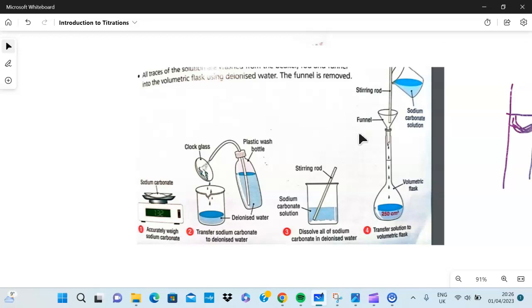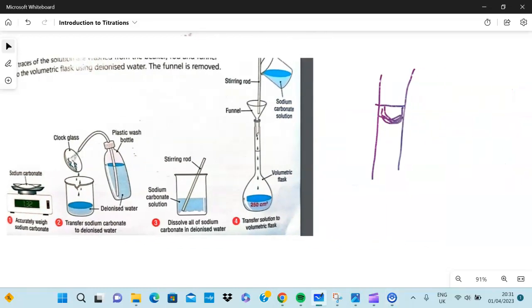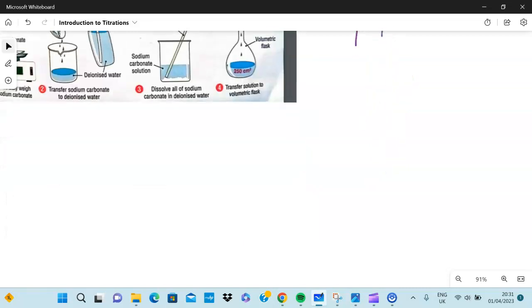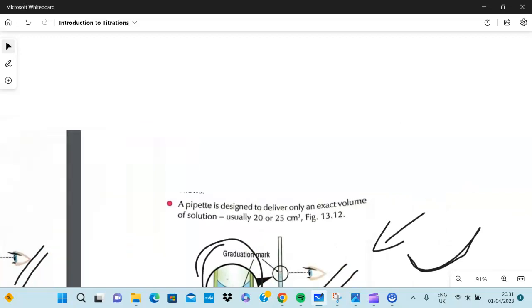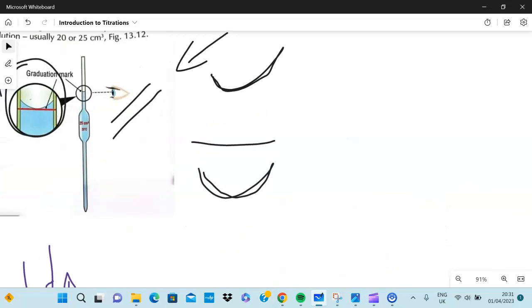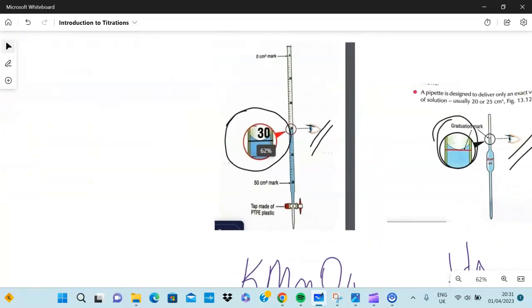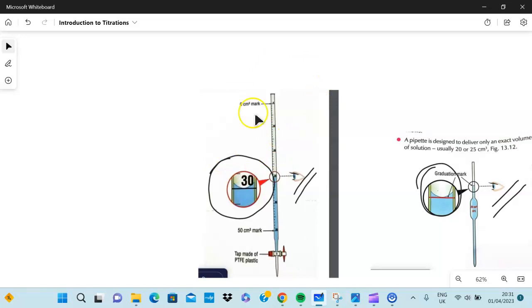You take a dropper and then put water, deionized water, dropwise till the bottom of the meniscus reaches the graduation mark. The meniscus, for those of you who don't know, is this curvature kind of line that the water forms. It does not form a straight line, it forms a curve.